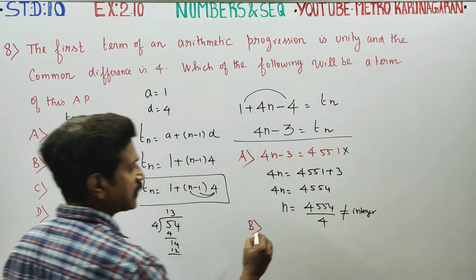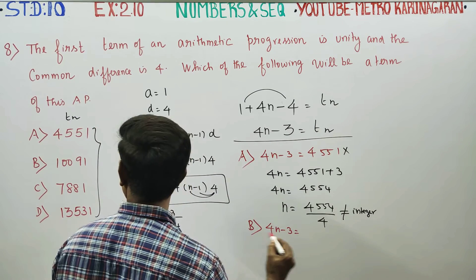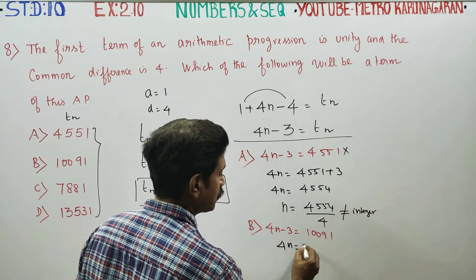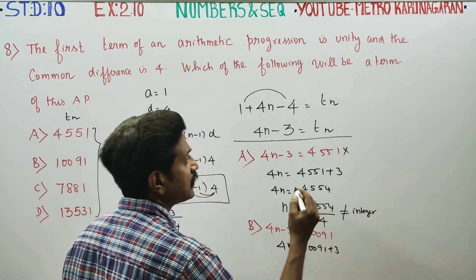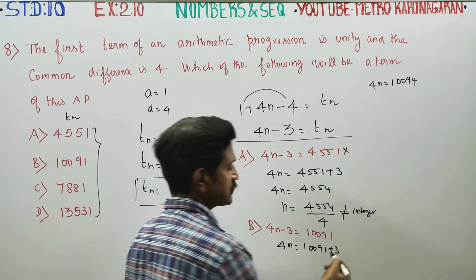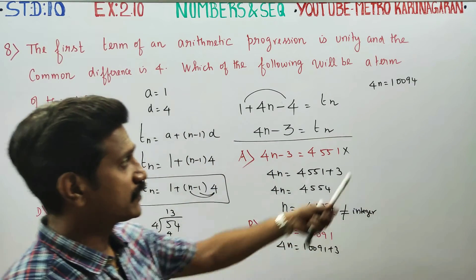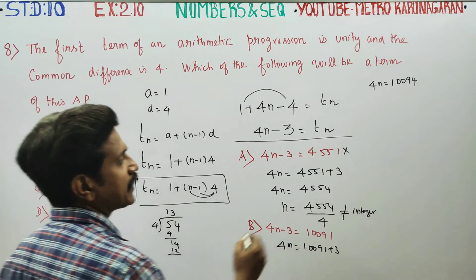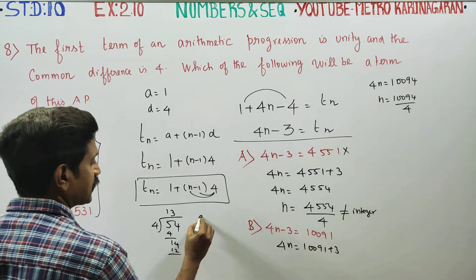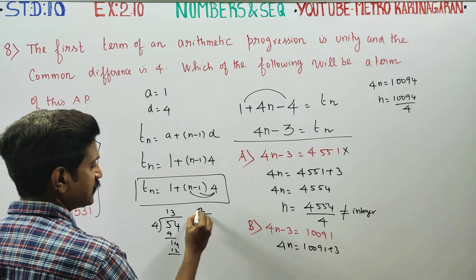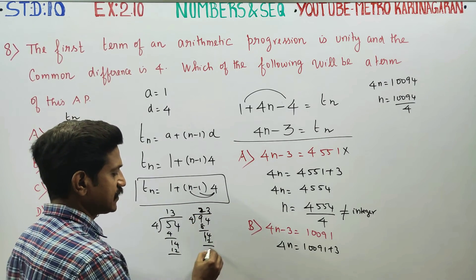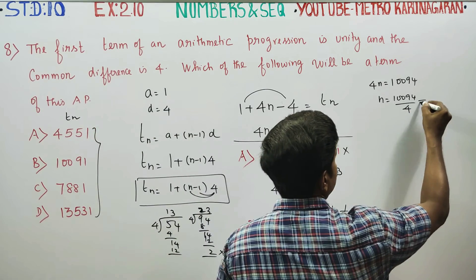Option B is 10091. Set 4N - 3 = 10091, so 4N = 10091 + 3 = 10094. Checking last two digits: 94 divided by 4. 4 × 2 = 8, balance 14; 4 × 3 = 12 — it is not an integer. Option B is also eliminated.